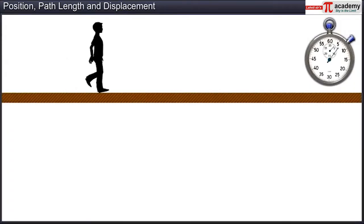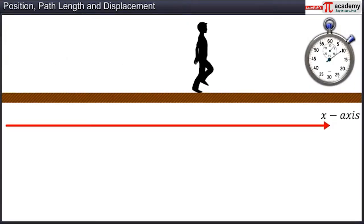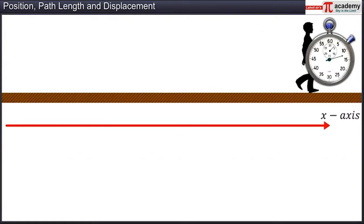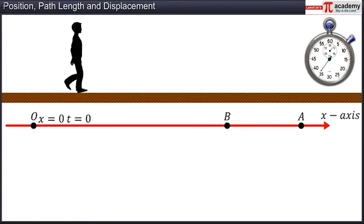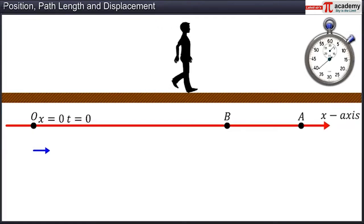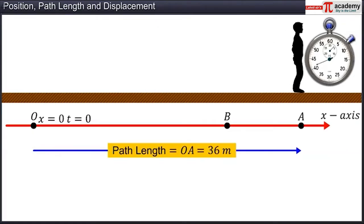Let's consider the example of a man walking along a straight line. Take the X axis to coincide with the straight line. Fix the origin of the axis at the point from where the man starts walking — this is represented by X equal to zero when time T is equal to zero. A and B represent the position of the man at different instances of time. In the first instance, the man moves from O to A. The distance moved by him is OA, which is 36 meters. This distance is the path length traversed by the man.